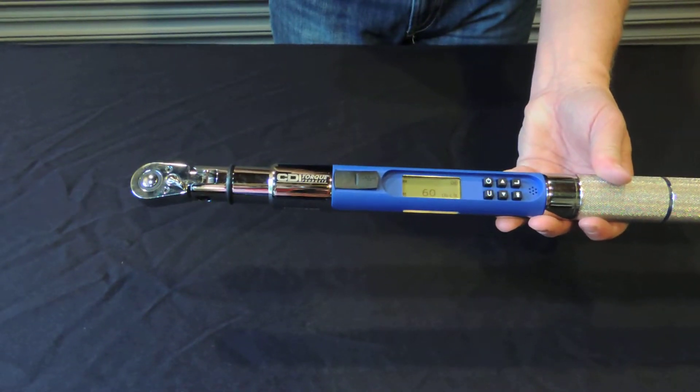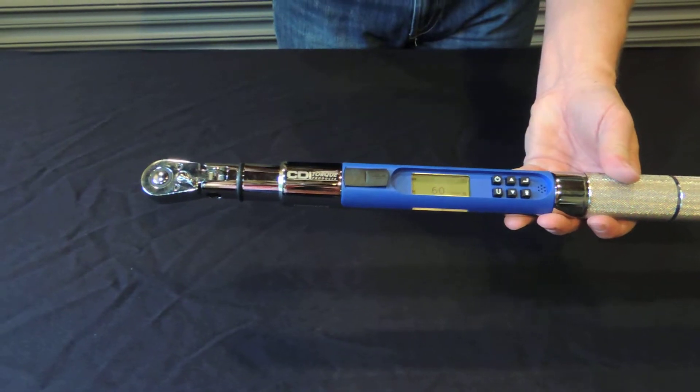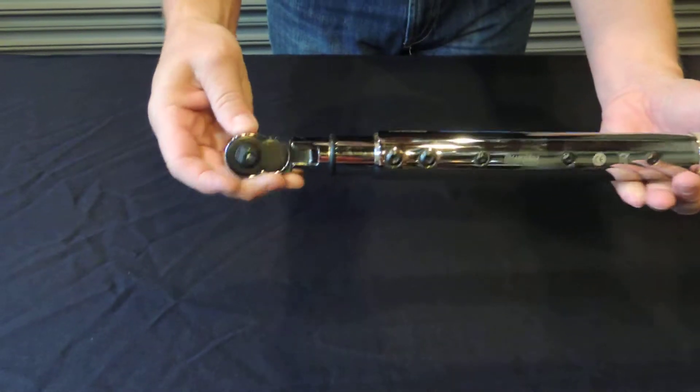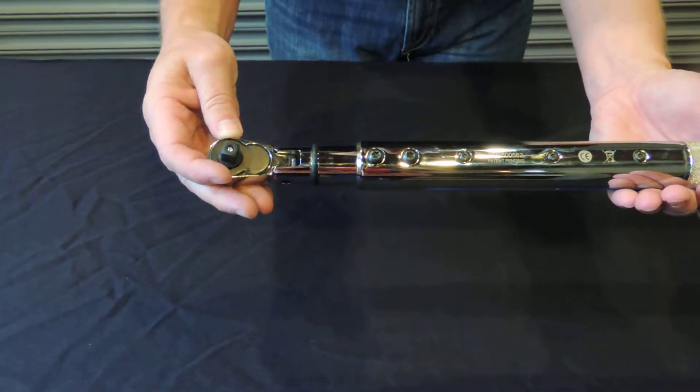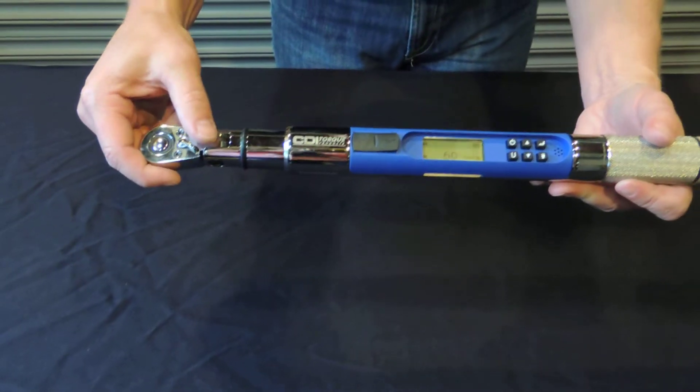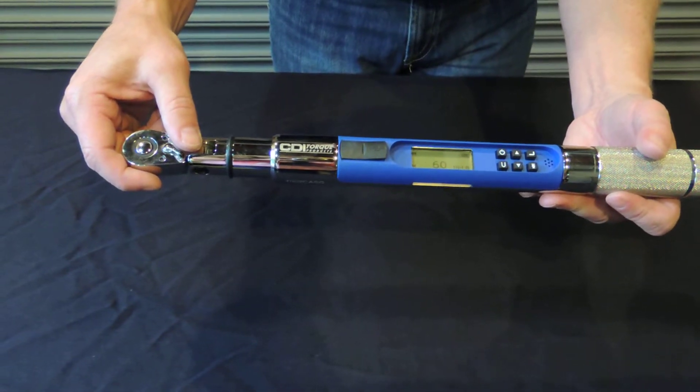It measures in inch pounds, foot pounds, and newton meters. It comes with a quarter inch drive up to a three quarter inch drive and goes up to a range of 600 foot pounds.